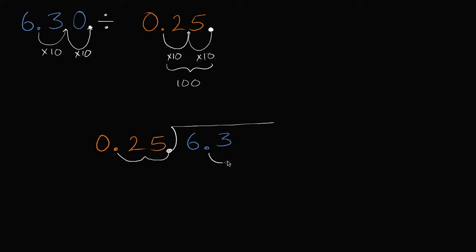And then 6.3 becomes, move it one space, two spaces to the right, it becomes 630. Let me just clear all this stuff out of the way so we don't have to deal with all this messiness when we're actually doing our long division. And we are ready to do some long division.